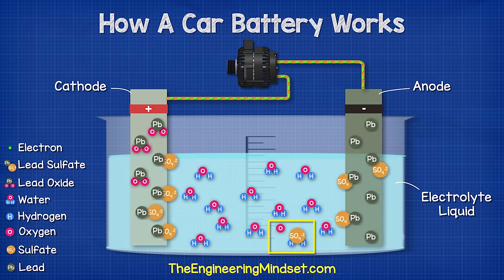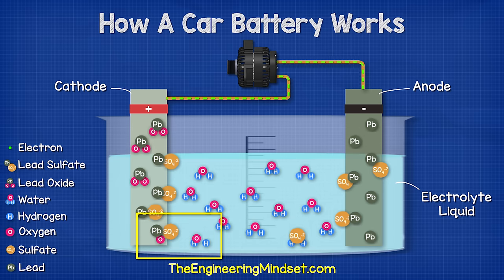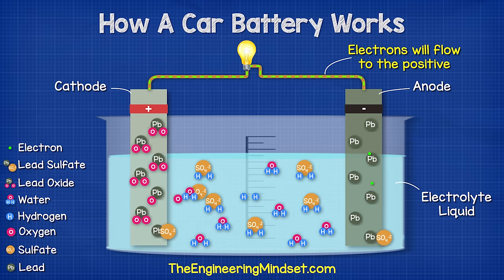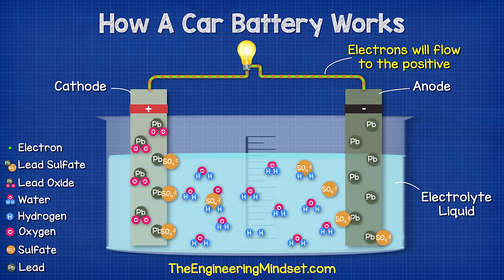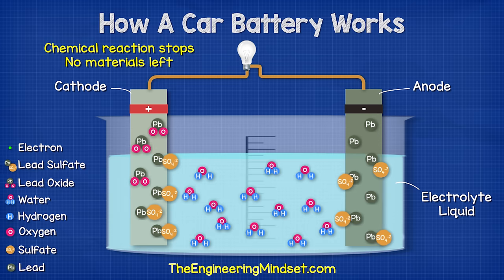The sulfate ions enter the electrolyte and combine with the hydrogen ions to release the oxygen ions, so the electrolyte acid becomes stronger. The oxygen ions combine with the lead to create lead oxide, releasing the sulfate back into the electrolyte making it even stronger. If we were to leave the battery to fully discharge for too long or too many times it becomes very difficult to reverse the chemical reaction.